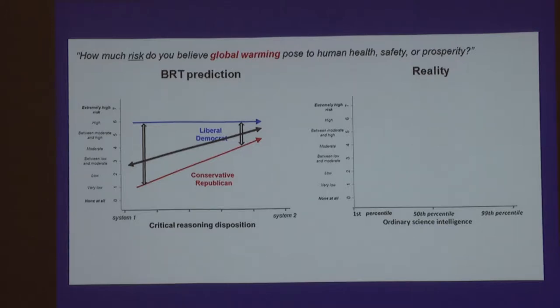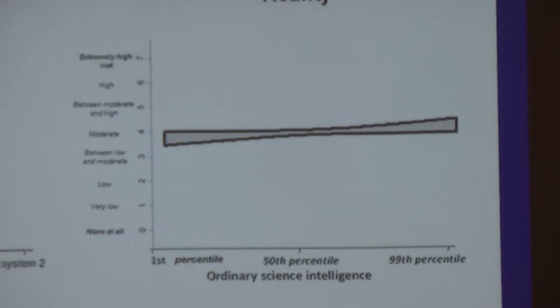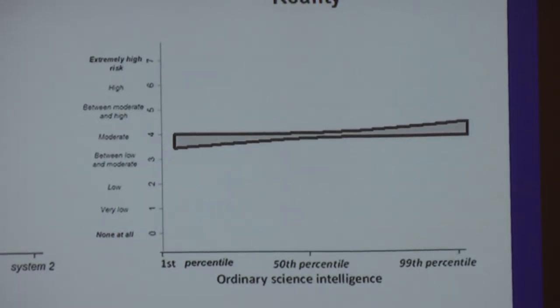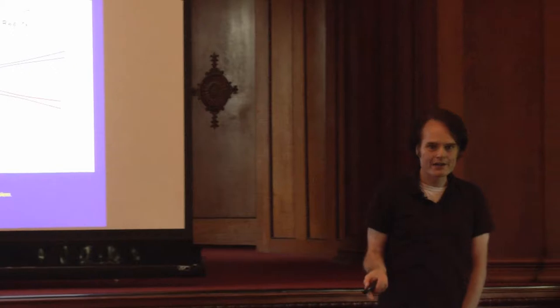People who are good at understanding science will go with the evidence, whereas people who aren't will go with their gut — shaped by what people like them believe. So as people become more proficient at system-two reasoning, you ought to see them converging, and the trend for the population as a whole ought to be going up. But this is what we actually see: there's not any impact at the population level on the perception of the risk of climate change as people become better able to comprehend science. As liberals become more proficient at understanding science, they're more likely to see climate change as a big risk. But as conservatives become more proficient, they become less likely to believe there's a serious risk.